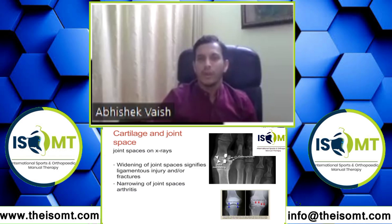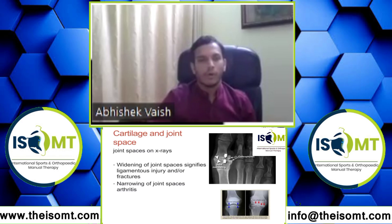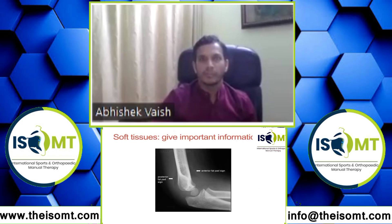This X-ray shows a reduction in joint space. This happens in arthritis — arthritis can be many types, but if you see osteophytes and concentric joint space reduction in small joints, it is usually osteoarthritis. Widening of joint space signifies that there may be a ligament injury, a fracture, or some fluid collection called effusion, which may increase the joint space.